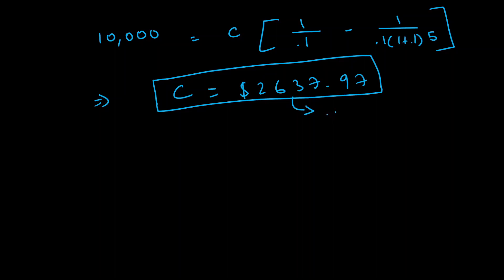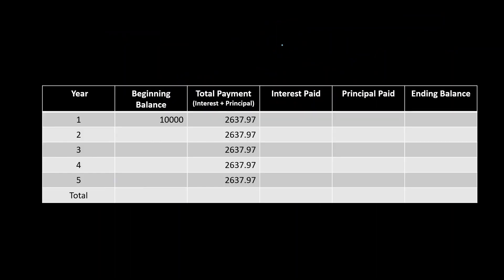We can verify this by creating an amortization schedule. In this one the process will be slightly different from the last video because the total payments are going to be the same for all five years, but the interest paid and the principal paid are going to be varying. Let's start with the interest paid — this is going to be ten percent of whatever the beginning balance is. So that's 0.1 into ten thousand, which equals one thousand dollars.